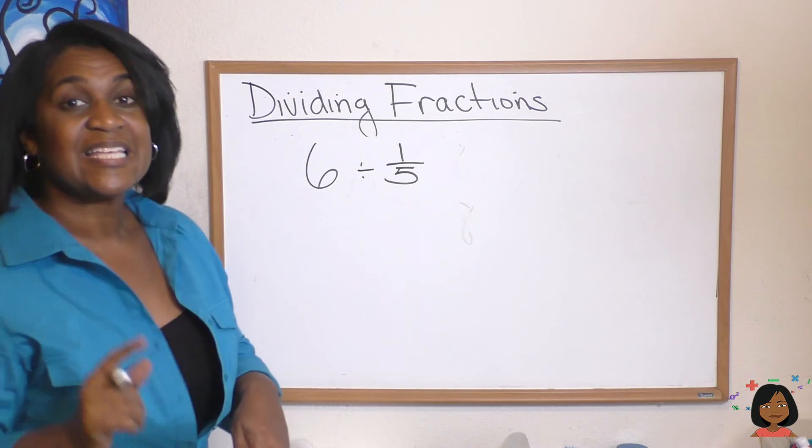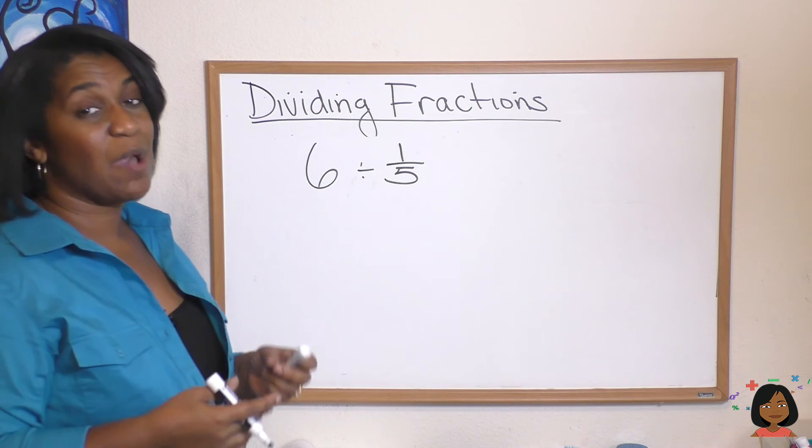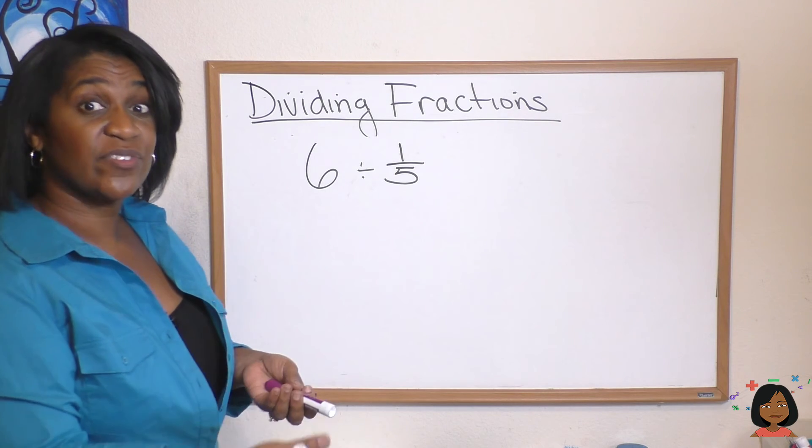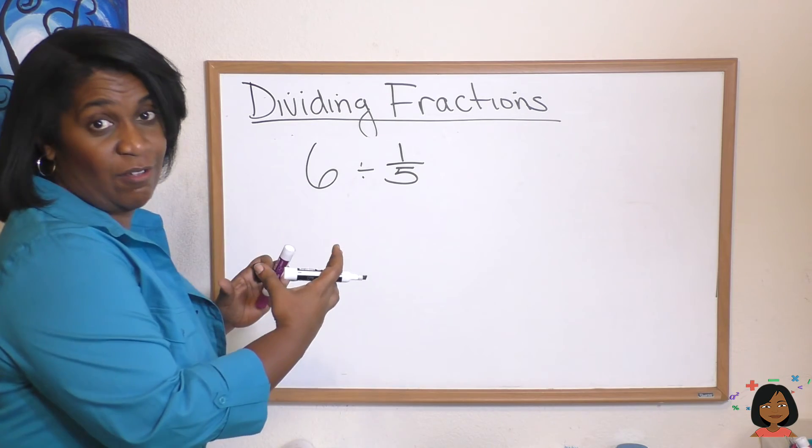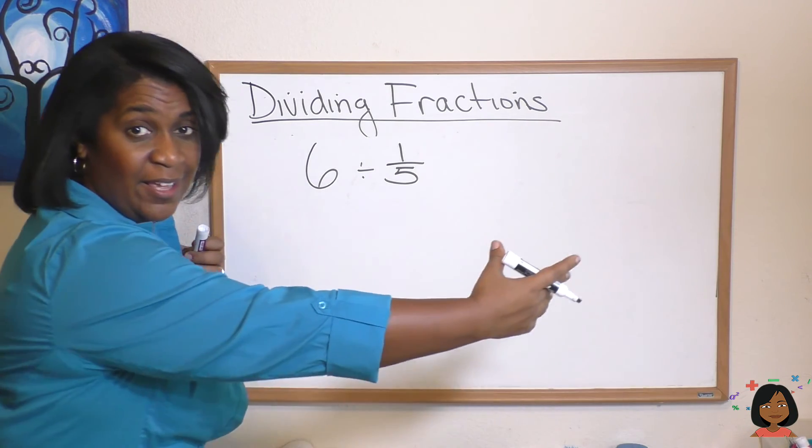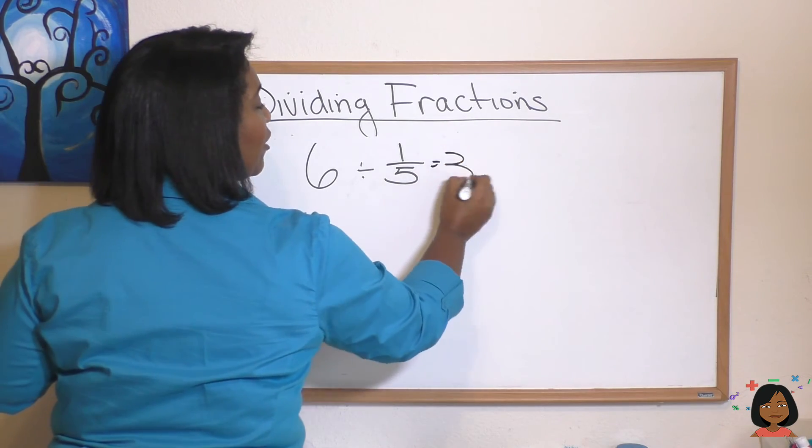Let's give you another example. Six divided by one-fifth. It's the same thing as saying how many one-fifths are there in six? Well we know there's five one-fifths in one circle so there's 30 in six circles. Right? So we know this answer is going to be 30.